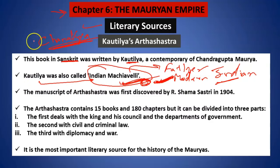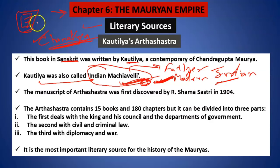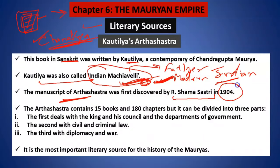Kautilya's philosophy was very influential, and you can realize how intelligent this person was — you will understand this when we study the political administration. The manuscript of Arthashastra was discovered by R. Shamasastry in the year 1904. This entire manuscript has 15 books and these 15 books have a total of 180 chapters.